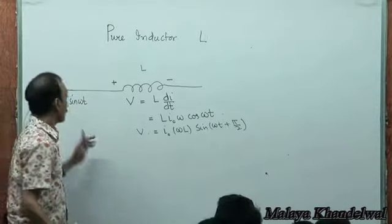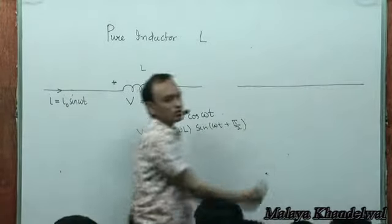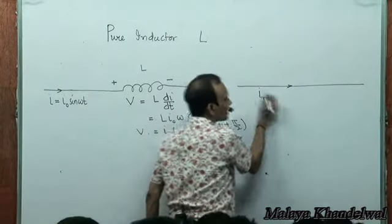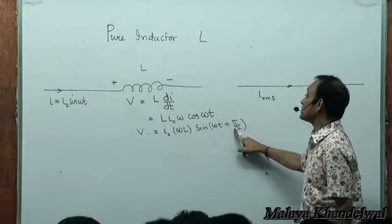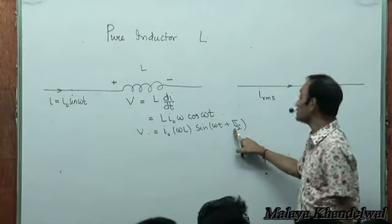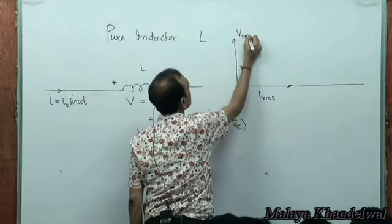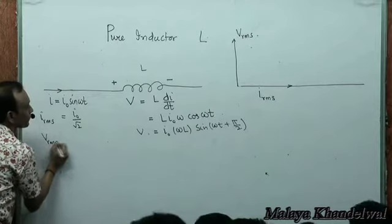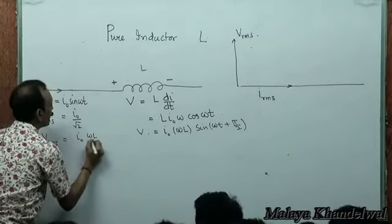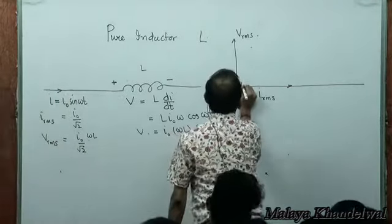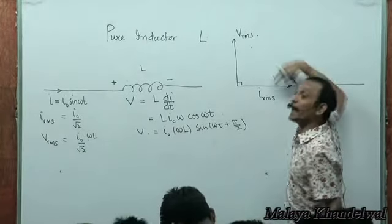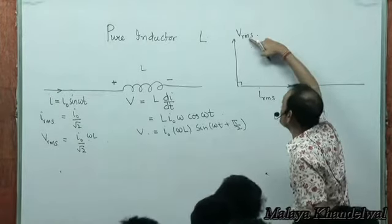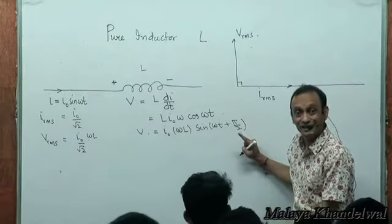Drawing the phasor diagram: the current phasor is Irms = I₀/√2 along the zero phase line. The voltage is 90° ahead of the current, so Vrms = I₀ωL/√2 is 90° ahead. This is a lagging circuit — current lags the voltage by 90°. Vrms and Irms are in quadrature.